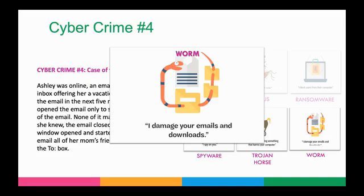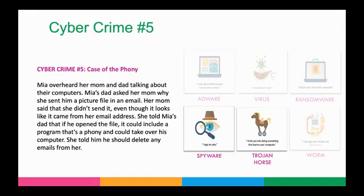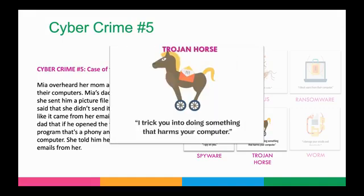Cyber crimes case number five: the case of the phony. Mia overheard her mom and dad talking about their computers. Mia's dad asked her mom why she sent him a picture file in an email. Her mom said she didn't send it, even though it looked like it came from her email address. She told Mia's dad that if he opened the file, it could include a program that's a phony and could take over his computer — he should delete any emails received from her that day. The answer is Trojan horse — I tricked you into doing something that harms your computer. It looked like an official email from Mia's mom, but it was an imposter. Malware can be embedded in attachments.